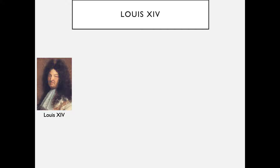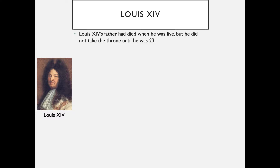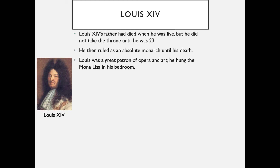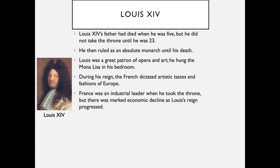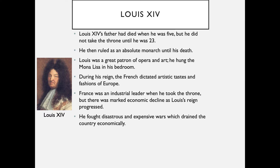Our last piece of artwork was commissioned by Louis XIV. Louis XIV's father had died when he was five, but he did not take the throne until he was 23, then ruled as an absolute monarch until his death. Louis XIV was a great patron of art and opera — he famously hung the Mona Lisa in his bedroom. During his reign, the French dictated the artistic tastes and fashions of Europe. France was an industrial leader when he took the throne, but there was marked economic decline as his reign progressed; he fought disastrous and expensive wars which drained France economically.